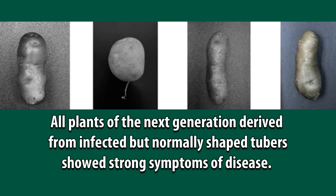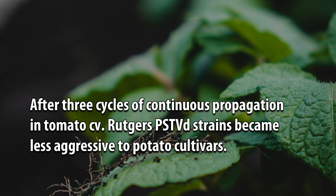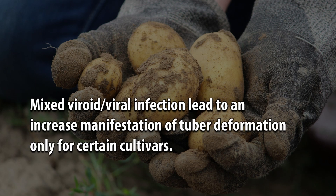All plants of the next generation derived from infected but normally-shaped tubers showed strong symptoms of disease. After three cycles of continuous propagation in tomato CV Rutgers, PSTVd strains became less aggressive to potato cultivars. Mixed viroid/viral infection led to an increased manifestation of tuber deformation only for certain cultivars.